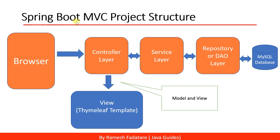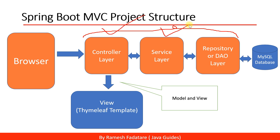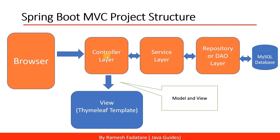Let's take a look into the Spring Boot MVC project architecture. This is the standard architecture we are going to follow to develop our Spring Boot application — a three-tier or three-layer architecture. It has a controller layer, service layer, and a repository or DAO layer. This is a widely used architecture in project development.